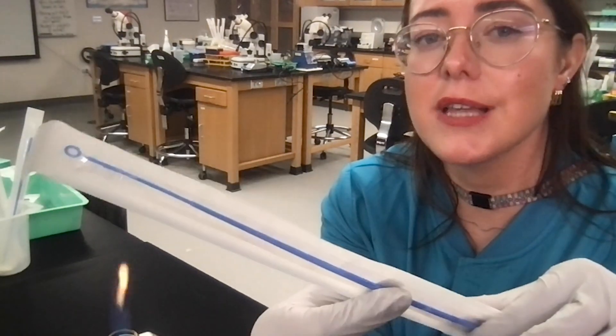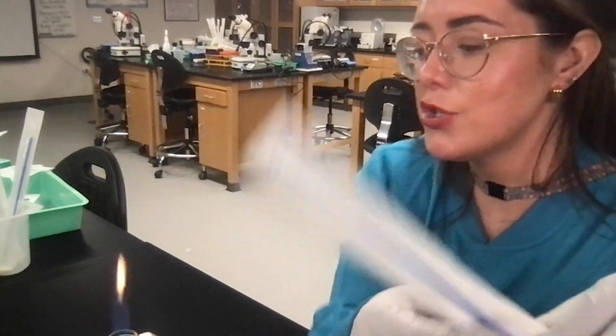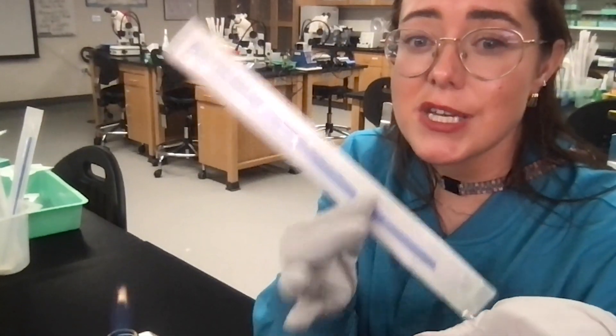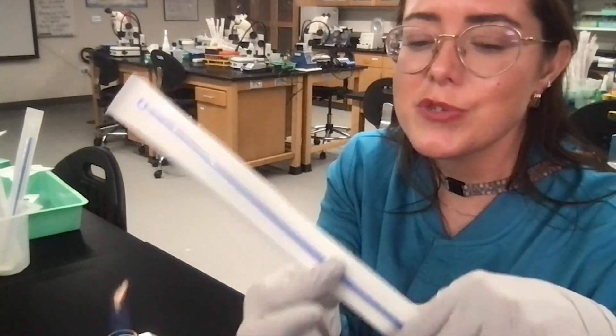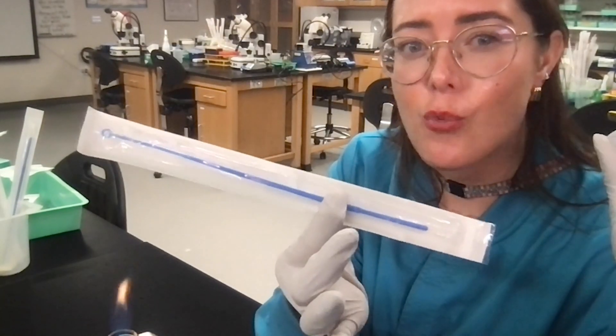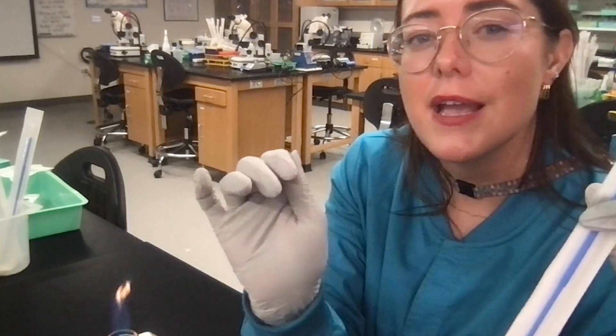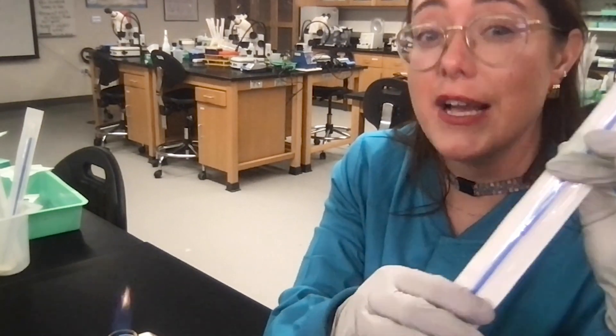Importantly, you have to sterilize it in between streaks, so you would just put it across the flame until it's red-hot. For this demonstration, I'm using plastic inoculation loops one-and-done, so I'm going to use this for one streak. I will toss it, and I will open up a new package for the next streak.